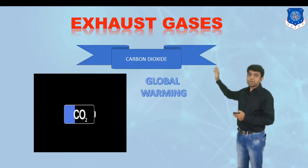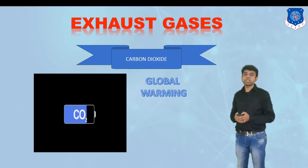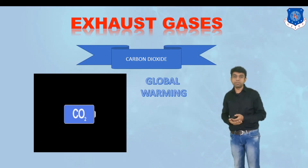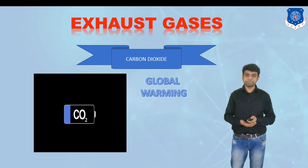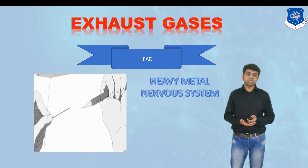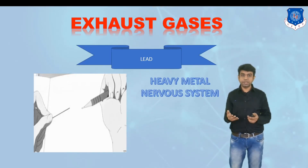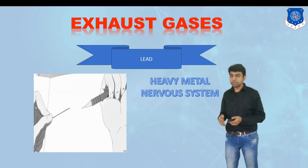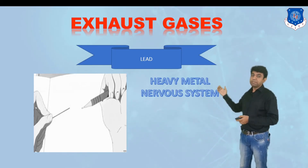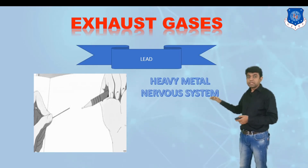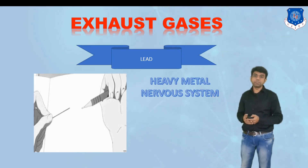Next is carbon dioxide, which leads to global warming and doesn't have significant other impacts. After that is lead generation. Nowadays we have unleaded petrol and diesel, but in earlier days lead was present in heavy quantities. This heavy metal accumulates at the exhaust pipe and has a huge impact on the nervous system of human beings.